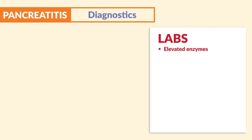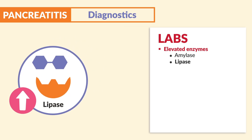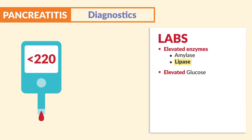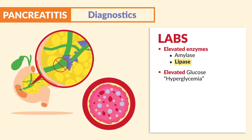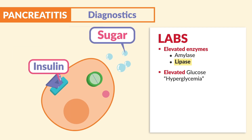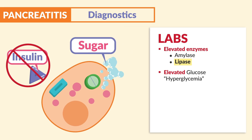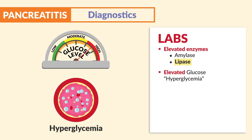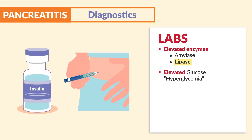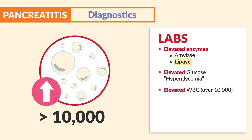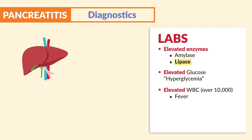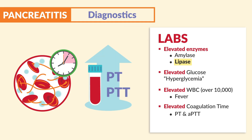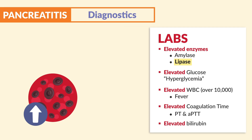In terms of labs, we have elevated enzymes — specifically amylase and lipase. Lipase is the biggest one; write that down, as it is always the most indicative and most tested for pancreatitis. We also see elevated glucose indicating hyperglycemia, from the lack of insulin that can't get out of the pancreas — without insulin, sugar can't enter the cell and sits in the bloodstream. Clients may temporarily need insulin. We also see elevated WBCs over 10,000, fever from inflammation, elevated coagulation time with elevated PT and APTT — a huge risk for bleeding — and elevated bilirubin causing jaundice.